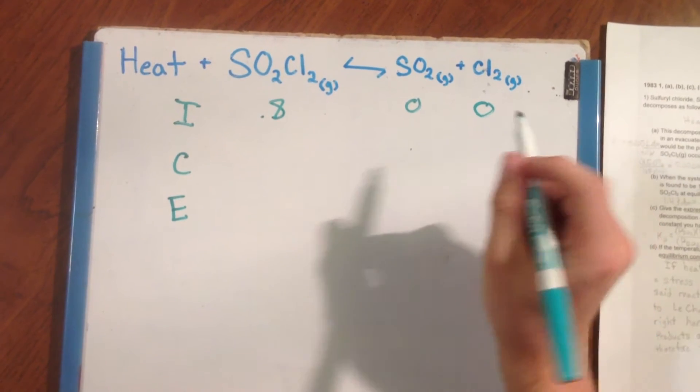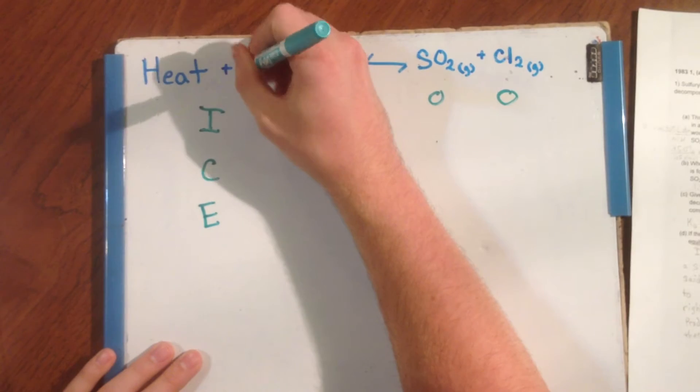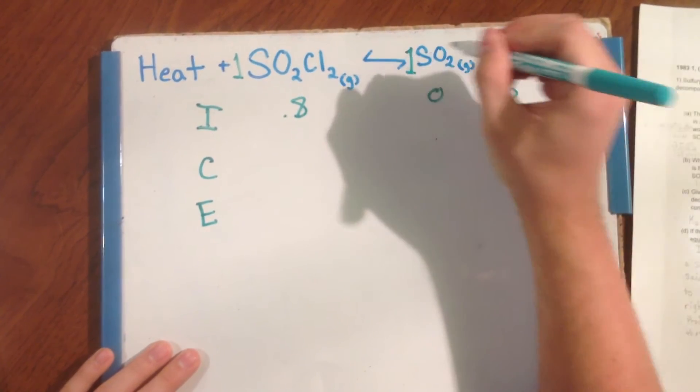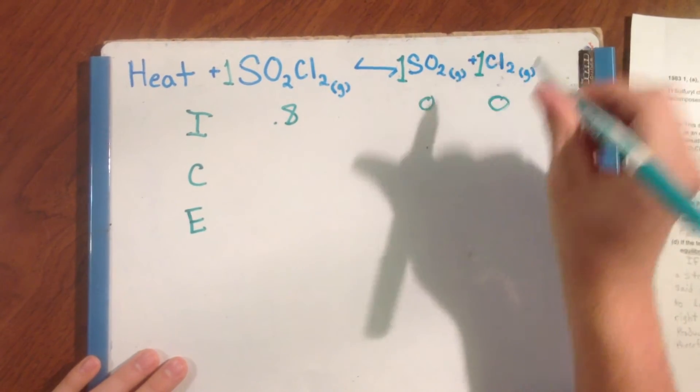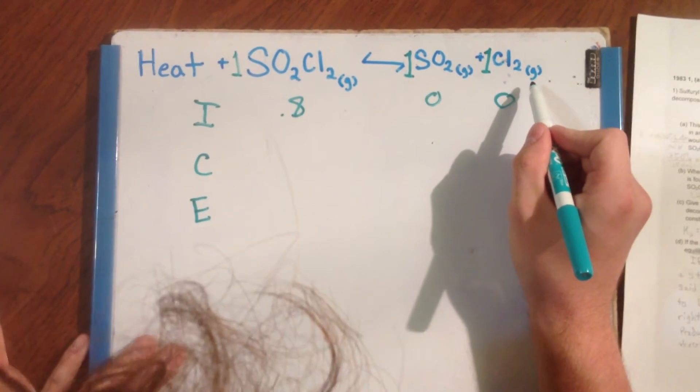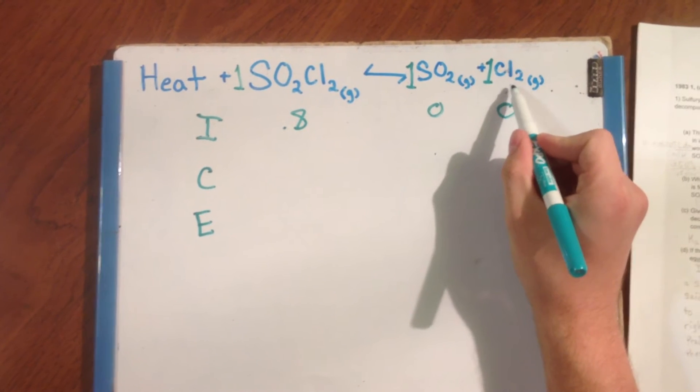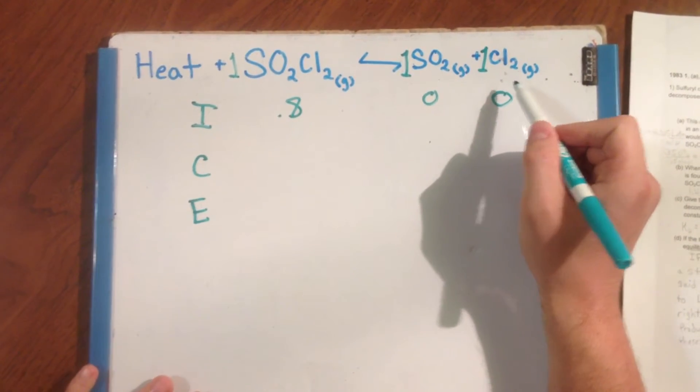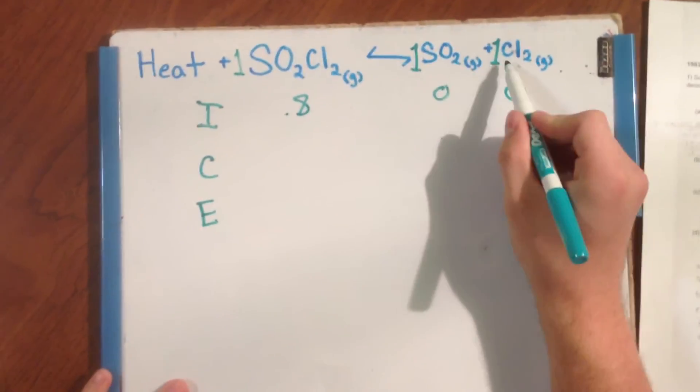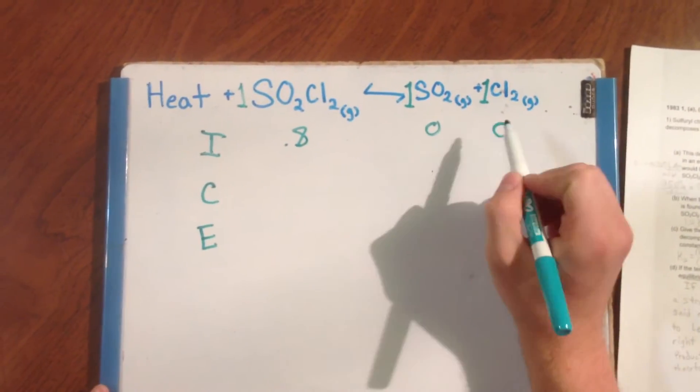Using the stoichiometry of the equation, the coefficients, we know that 1 mole of SO2Cl2 gas yields 1 mole of SO2 gas and 1 mole of Cl2 gas. Which we will show as X because we do not know the pressure associated with it yet. Which means that the pressure of 1 mole of SO2 gas is equal to the pressure of 1 mole of Cl2 gas is equal to X.